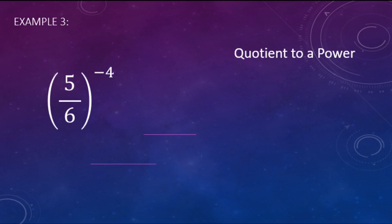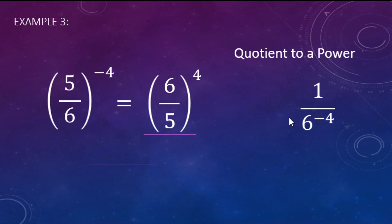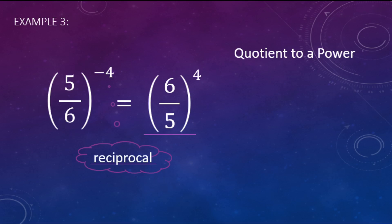One more example using the quotient-to-a-power property, broken into two parts. We get 5 to the negative fourth in the numerator and 6 to the negative fourth in the denominator. The 5 to the negative fourth becomes 1 over 5 to the positive fourth. Then 1 over 6 to the negative fourth — thinking reciprocals — becomes 6 to the positive fourth in the numerator. So our final answer is 6 to the fourth over 5 to the fourth: we applied the reciprocal and changed negative exponents to positive.